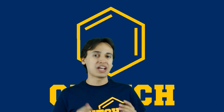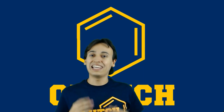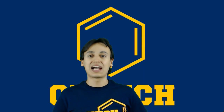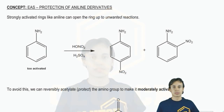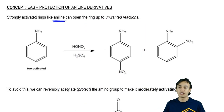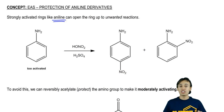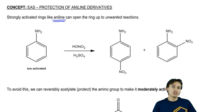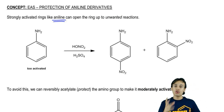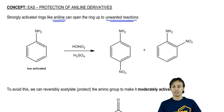In this video, we're going to talk about the challenges of doing EAS reactions on aniline because it's the most activated benzene. Strongly activated rings like aniline — remember, NH2 is the most activating group. Unfortunately, even though it's activating and wants to react, it's so active that it opens up the ring to unwanted reactions.